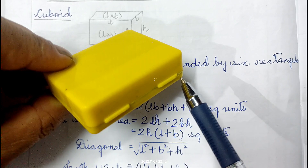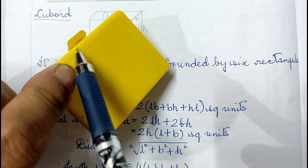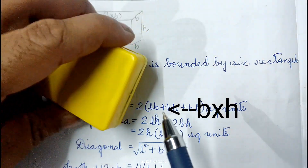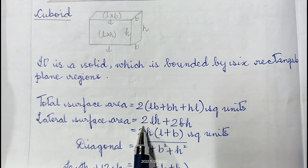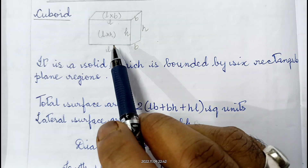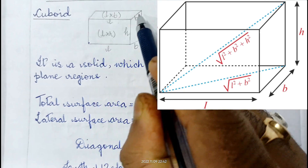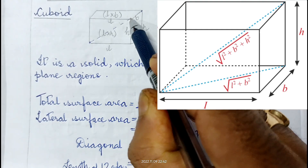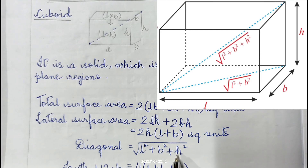For the lateral surface area, we consider only the four walls: two faces of L×H and two faces of B×H. So lateral surface area = 2(L×H) + 2(B×H) = 2H(L + B). If we want to place the longest rod in this box, we consider the diagonal from one corner to the opposite corner. The diagonal of a cuboid = √(L² + B² + H²).